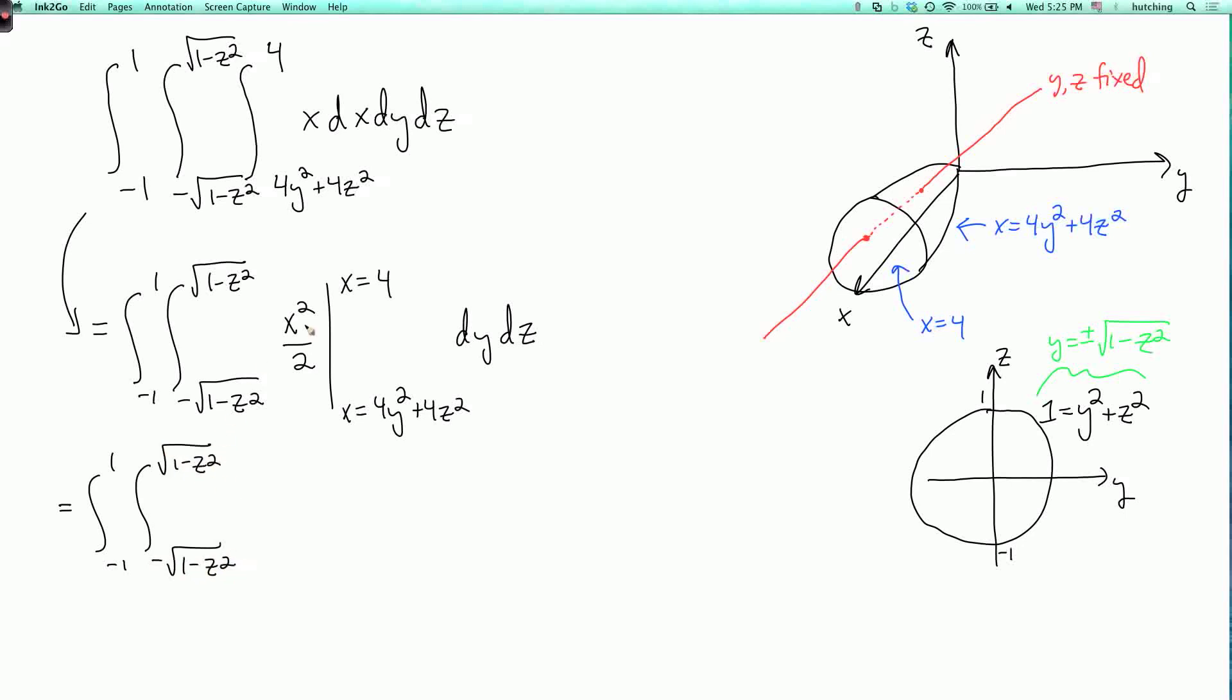So, when x equals 4, x squared over 2 is 8. And when x equals 4y squared plus 4z squared, x squared over 2 is 8 times y squared plus z squared squared.